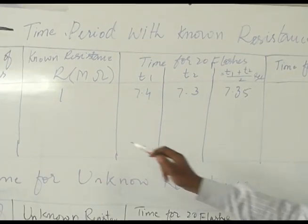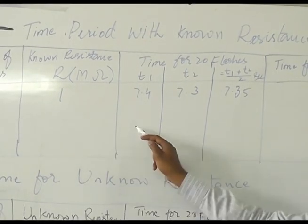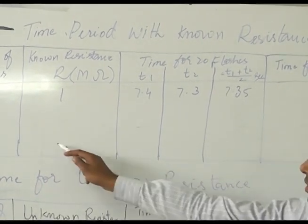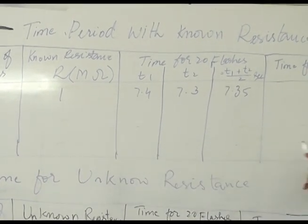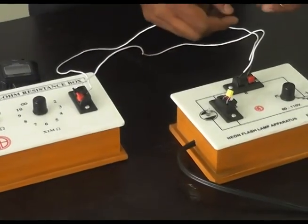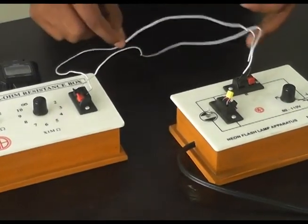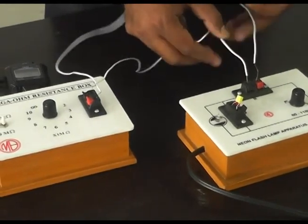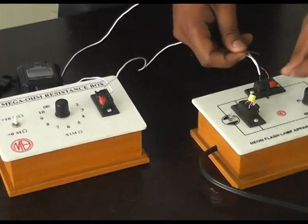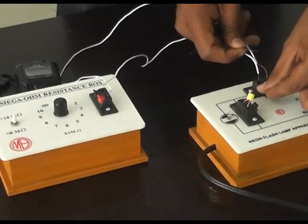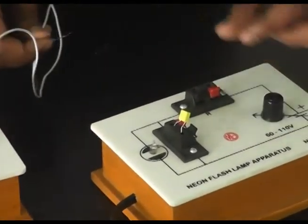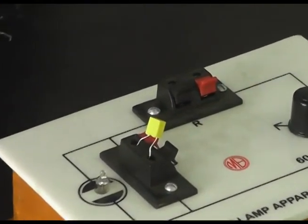Similarly, we will take two more readings. Now I will replace this known resistance with the unknown resistance. For this, remove these wires and fix in the unknown resistance.